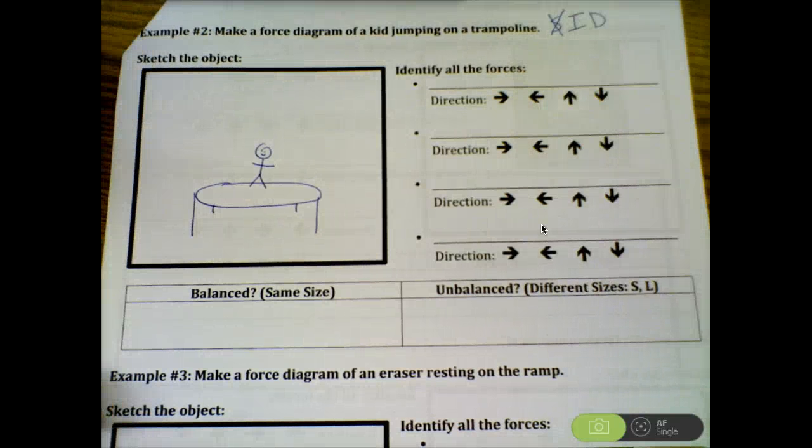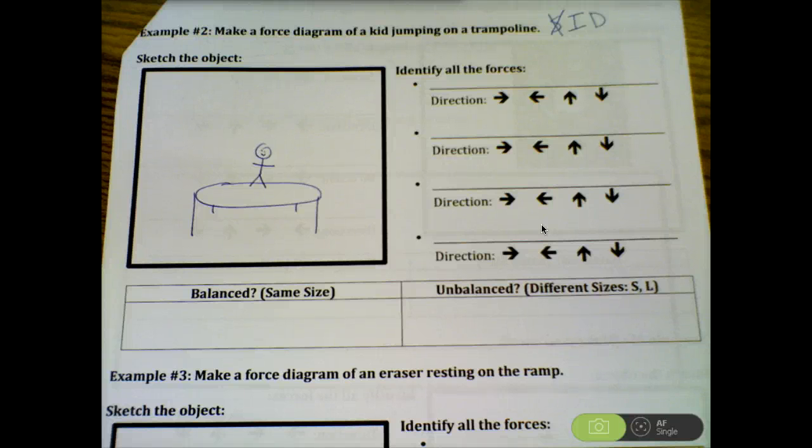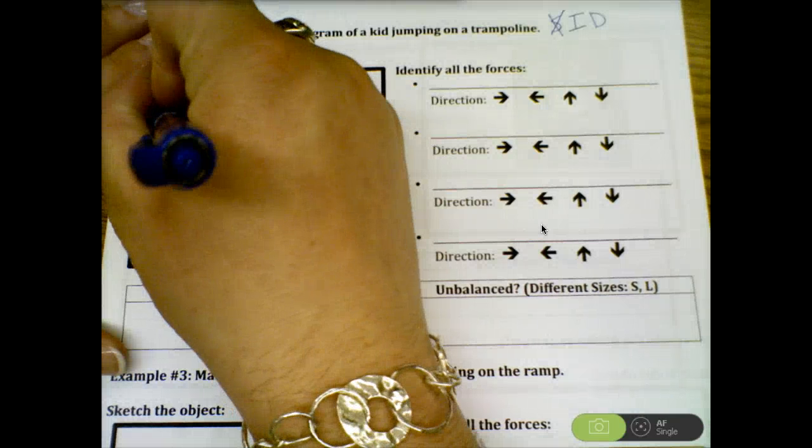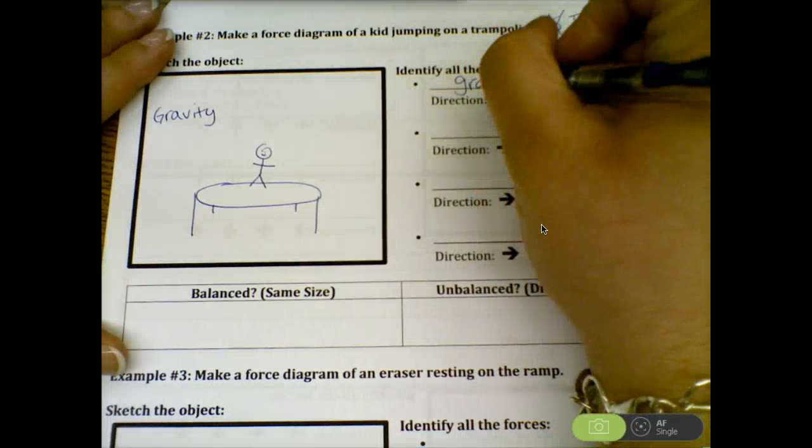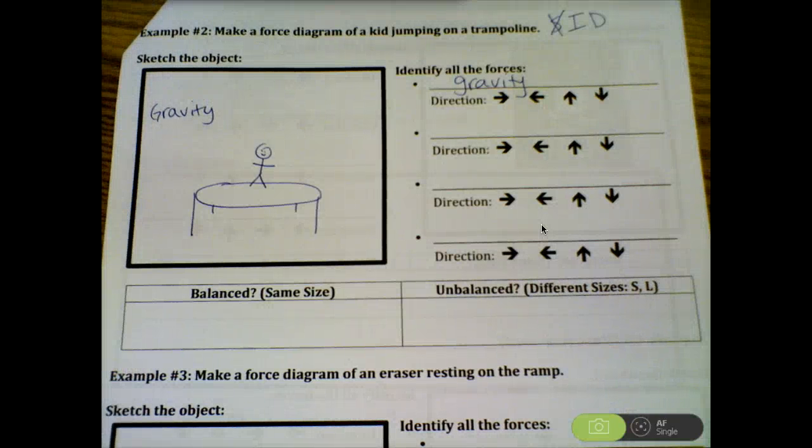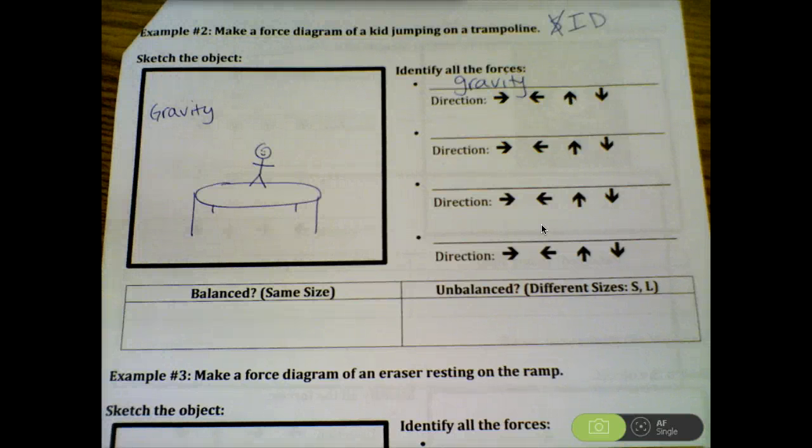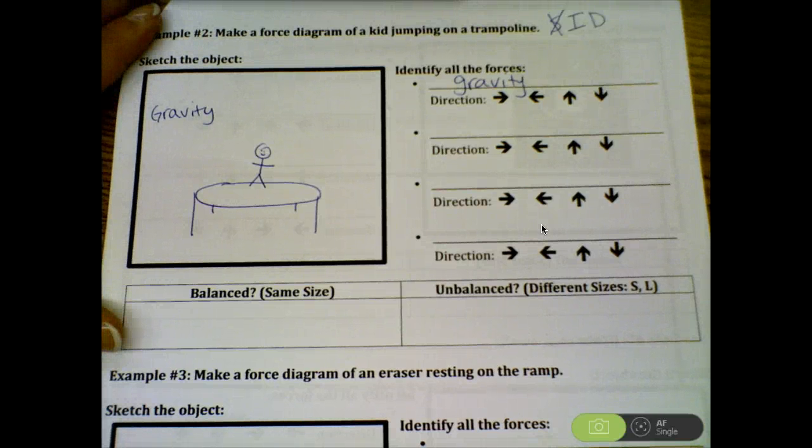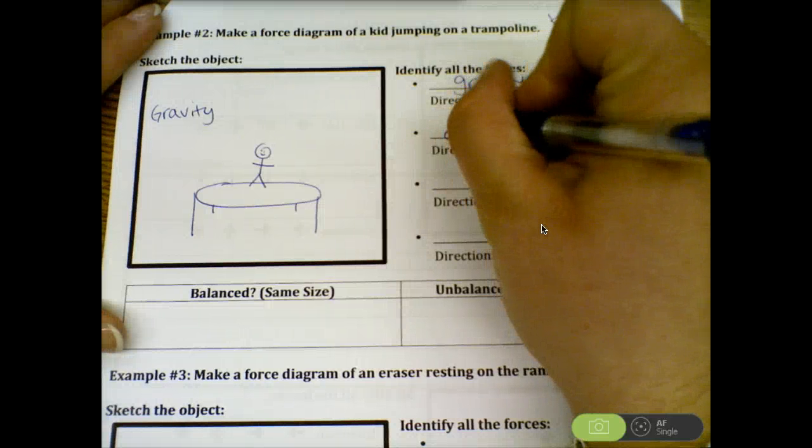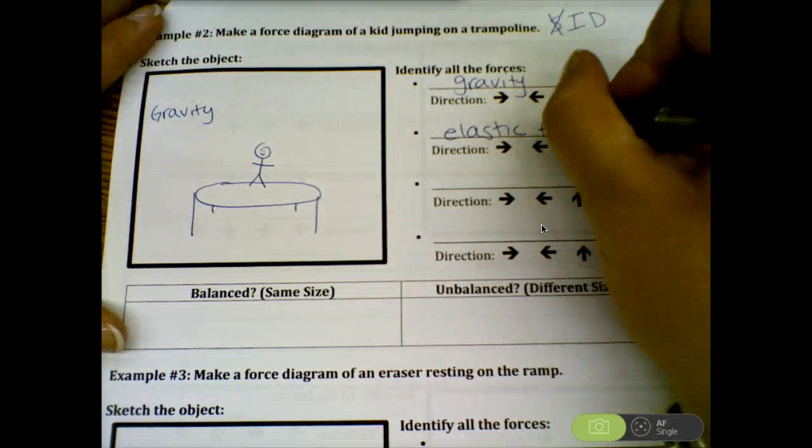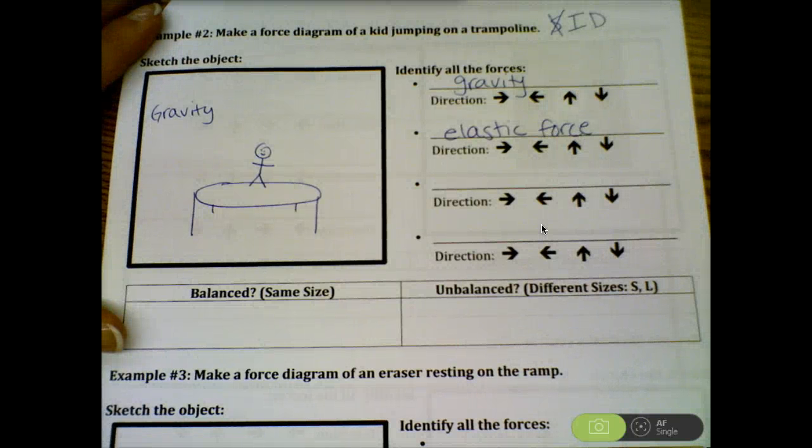We have sketched the object, we can cross that off. The next thing we need to do is identify the forces. In this case, there are quite a few forces. We should always know that gravity is acting always, so that is a no-brainer. Many of you were confused between support and elastic. As soon as something is stretchy or bouncy, that makes it an elastic force. In this case the trampoline is helping the student or child bounce back up. So that is going to be an elastic force.